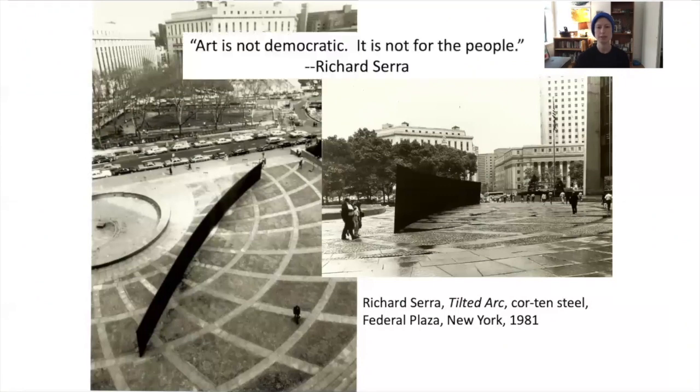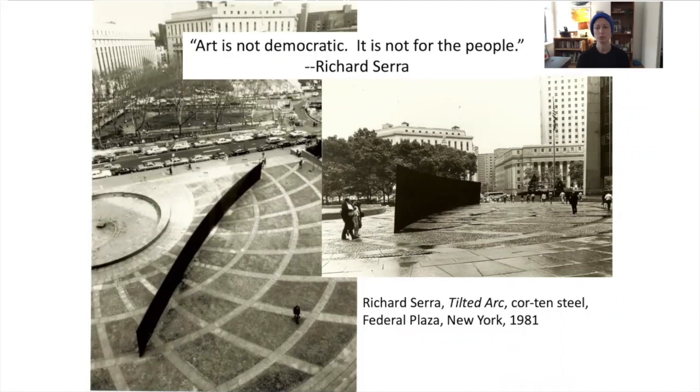Serra also ensured that the remaining half of the space was left open for social functions of any kind. He argued: 'It is false to say that the social function of the plaza is destroyed. The experience of art itself is a social function. It is curious to me that people who are concerned with function can't even put water in their fountain.' Serra would say that art is not democratic — it is not for the people. But what would you say about its relationship to the site and to the public?